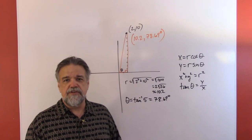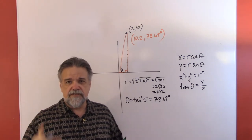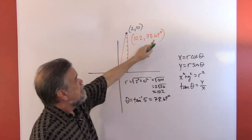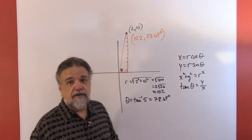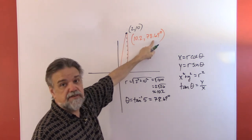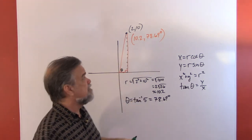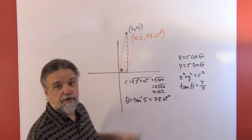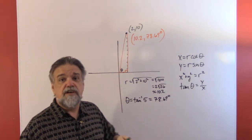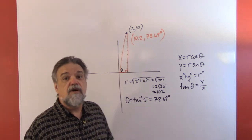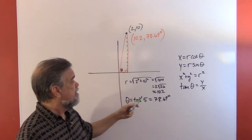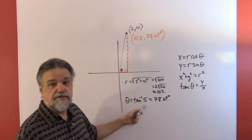Is that the only way to write this in polar coordinates? No — the assignment of polar coordinates to a point is not unique. An easy way to get another coordinate pair is to add 360 or subtract 360 from 78.69 degrees, giving a coterminal angle — meaning it points in the same direction — which also works. So it's an answer, but not the only answer. Just take the square root of x squared plus y squared, and the inverse tangent of y over x.